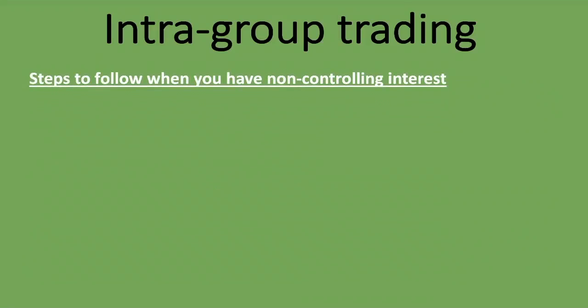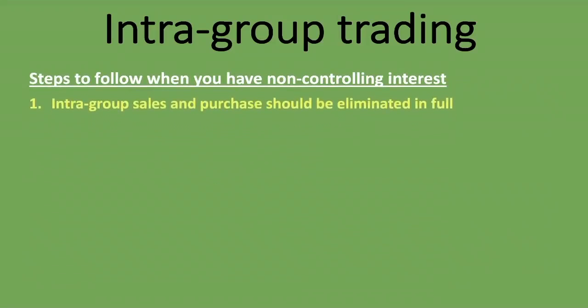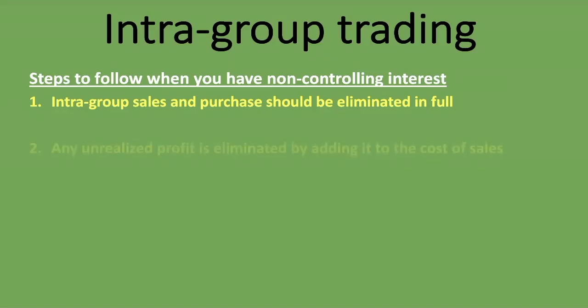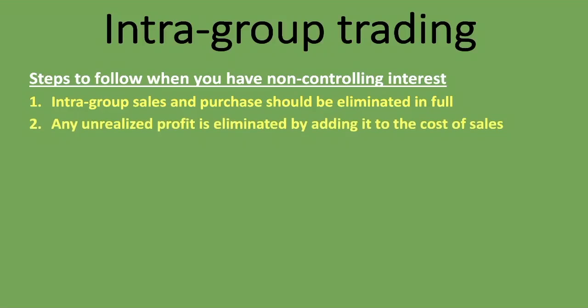Here are the steps to follow when you have non-controlling interest. First, intragroup sales and purchases should be eliminated in full. When combining amounts for companies within the group in the consolidated statement of profit or loss, you deduct the sale made within the group from the total sales amount, and you also deduct the exact same amount from purchases or cost of sales. This eliminates the intragroup trading aspect entirely.